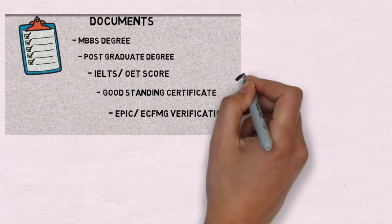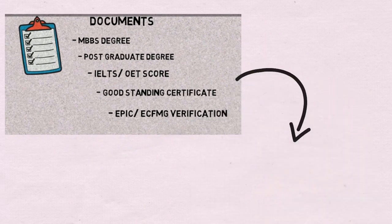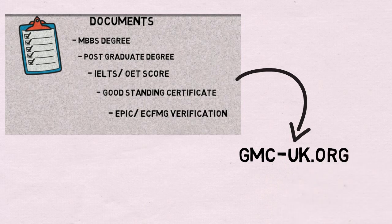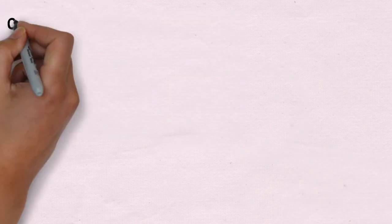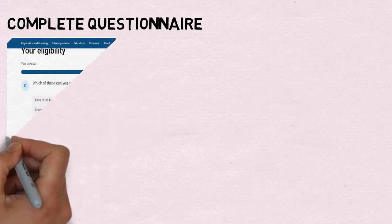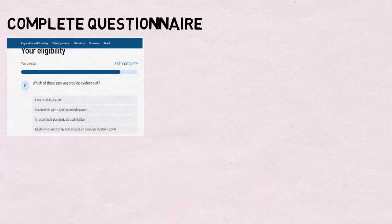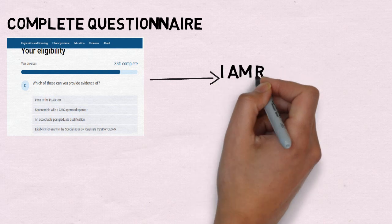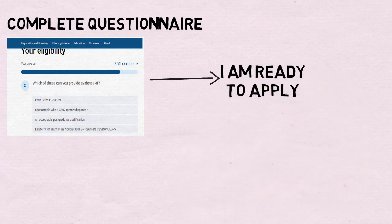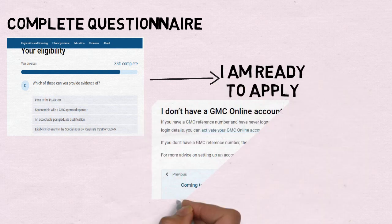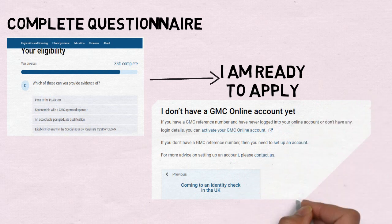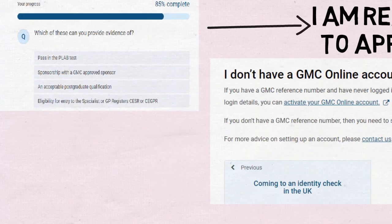You have to complete the questionnaire which is given on the website. Once you complete the questionnaire, you will reach a point where it will say 'I am ready to apply.' When you click on this, you will be able to set up your account, fill your details, and this will create your GMC ID.